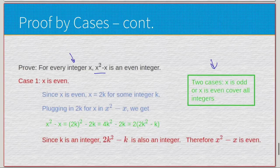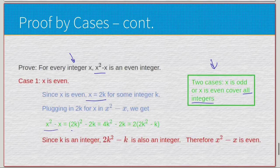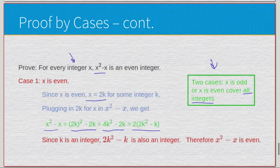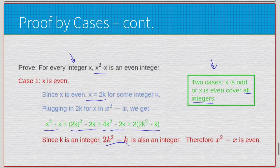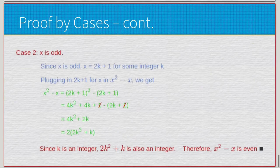We know integers are either even or odd, and we have specific definitions for both. Case 1: x is even. Since x is even, x = 2k for some integer k. Plugging 2k into x² - x gives (2k)² - 2k = 4k² - 2k. Factoring out 2 gives 2(2k² - k). Multiplication, exponents, and subtraction don't change integer status, so this is 2 times an integer — guaranteed to be even. Case 1 is proven.